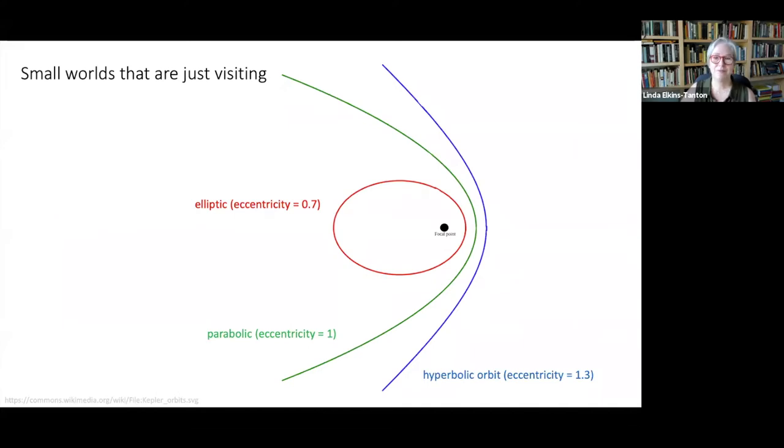Small worlds that are just visiting. They are not gravitationally bound to our sun. We can tell that they're just visiting by characteristics of their path. The orbital eccentricity is a number that measures the amount by which the orbit, the oval of the orbit, the ellipse, deviates from a perfect circle. A value of zero is a circular orbit. An eccentricity of 0.7 is a nice ellipse. A value of one makes a parabola, which is the borderline case between an elliptical orbit that's closed and repeating, where the body comes back over and over again, and a hyperbolic orbit like the blue one, where the body escapes and does not repeat.